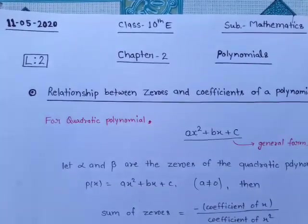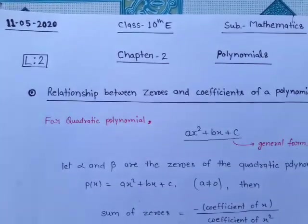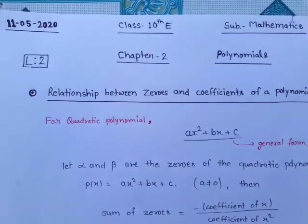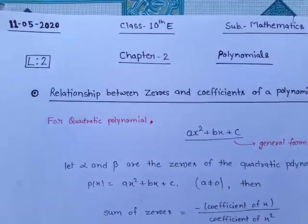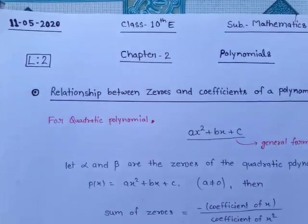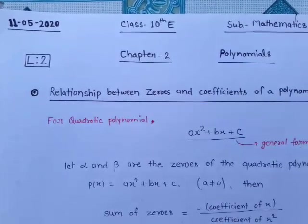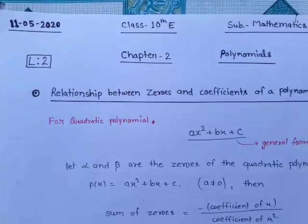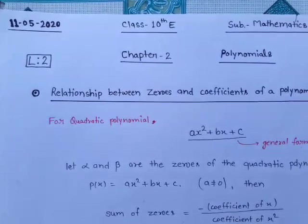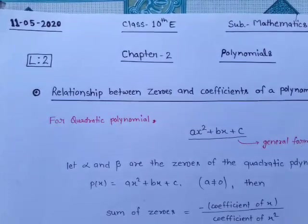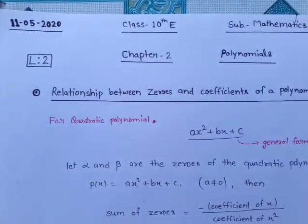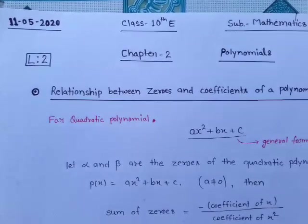In the previous lecture, we discussed some introduction of this chapter — what is a polynomial and types of polynomials. We discussed two types of polynomials: on the basis of terms and on the basis of degree. We also discussed a pattern for how many zeros a polynomial has through the graph.